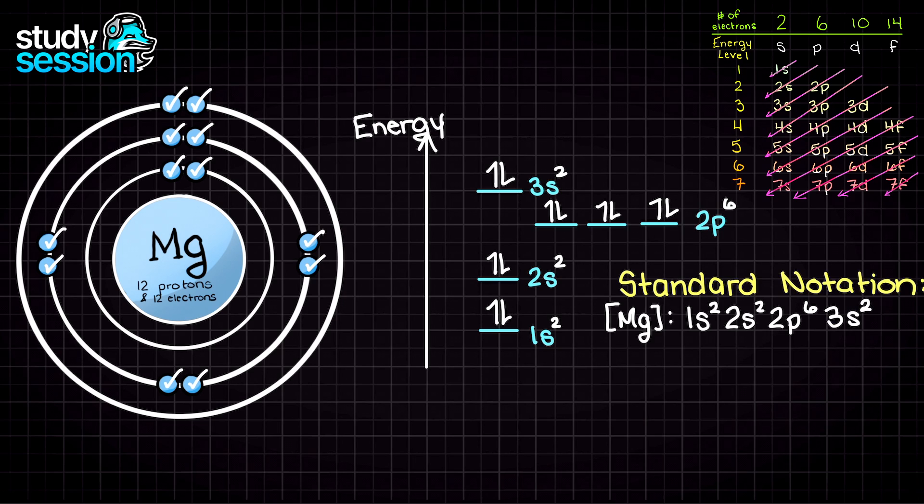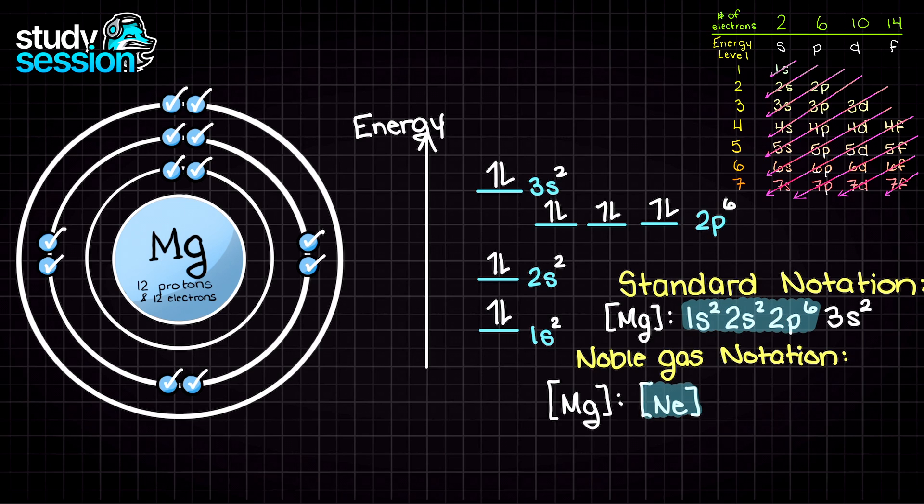To write the noble gas notation, we simply look at the noble gas that has an atomic number lower than magnesium, so that is going to be neon. In the noble gas notation, we simply shorten this section as neon's ground state electron configuration, like so, and we write out the remaining electrons. We have now solved for the ground state electron configuration of magnesium in the standard and noble gas notations.